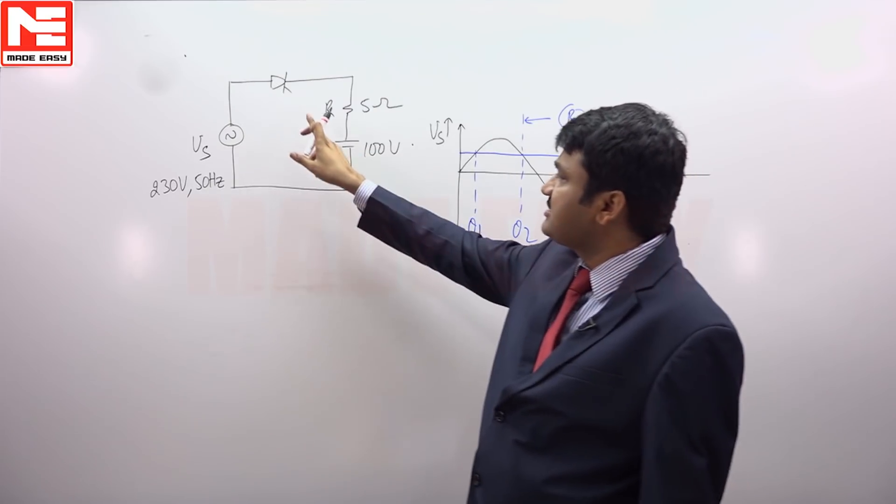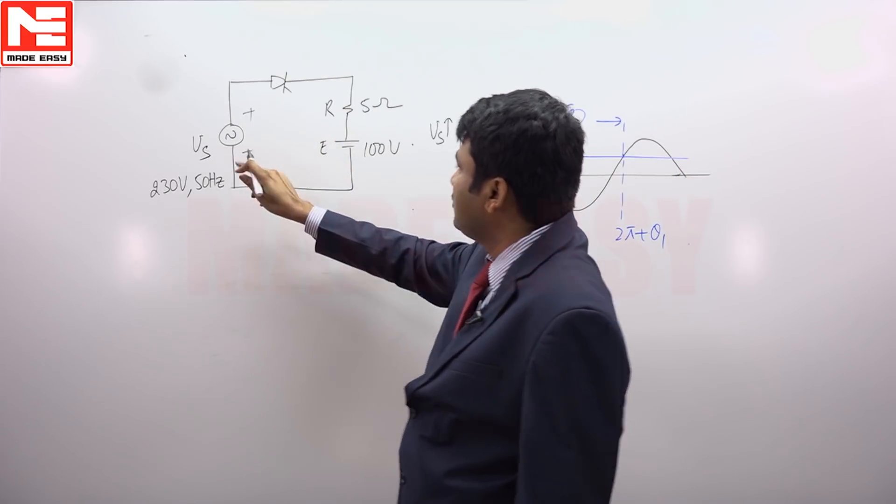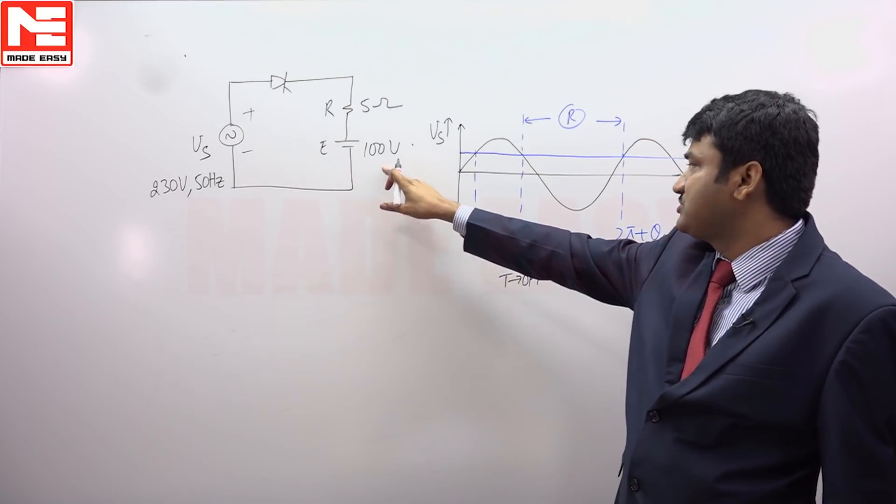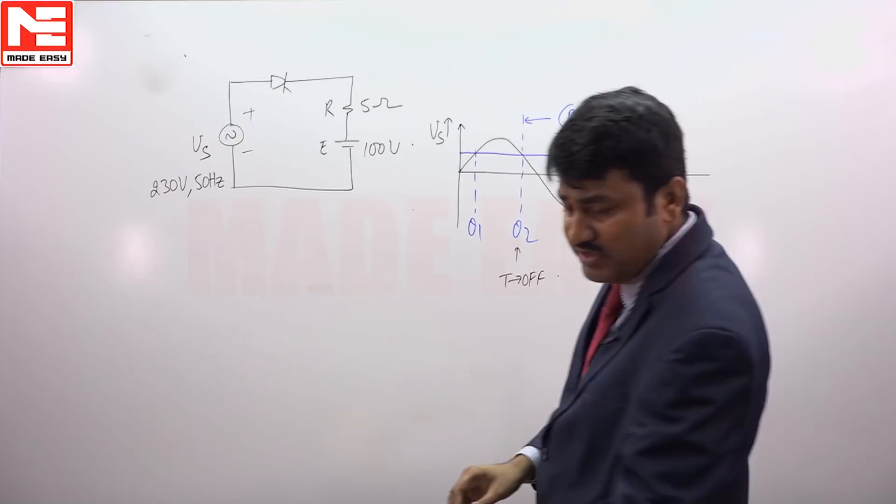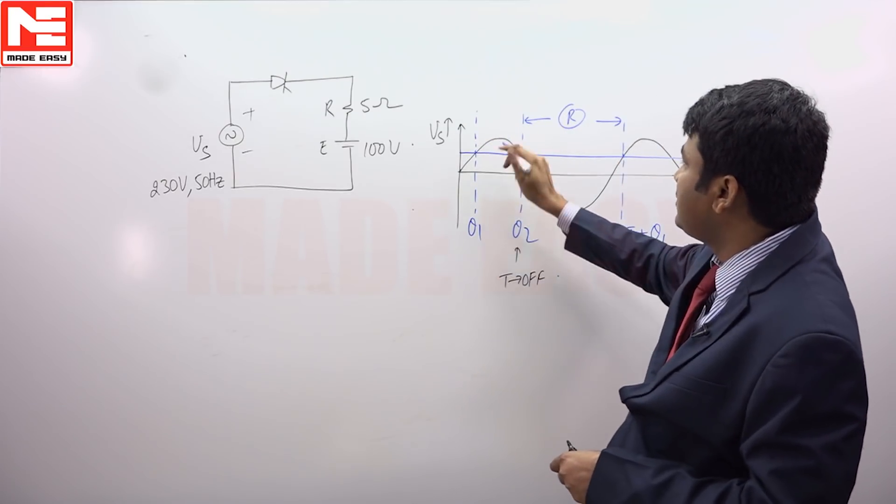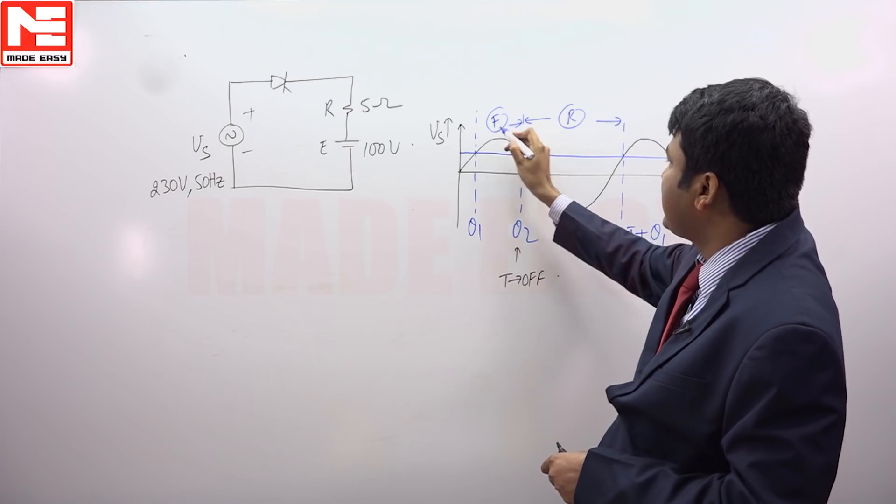So in this case, thyristor will be forward biased only when supply voltage is more than the battery voltage of E volts. So that means from in between theta 1 and theta 2, you can see supply voltage is more than the battery voltage. Here thyristor is forward biased.